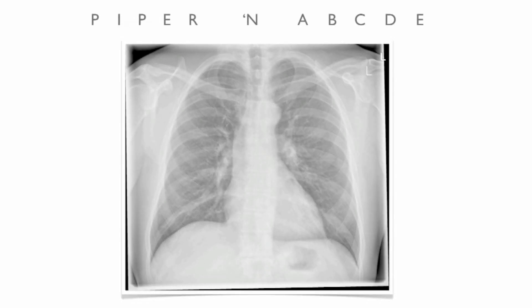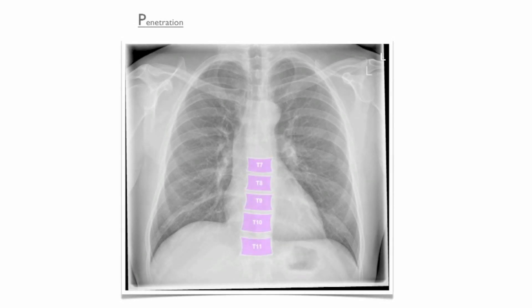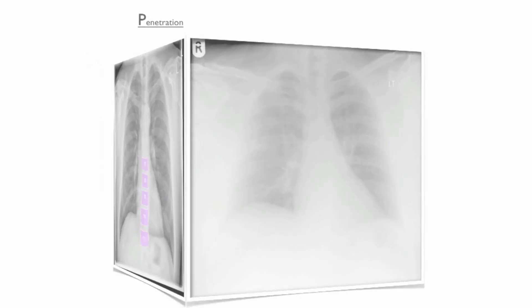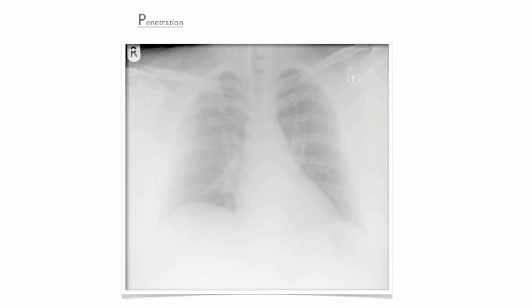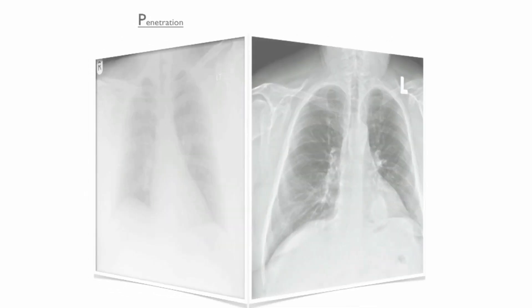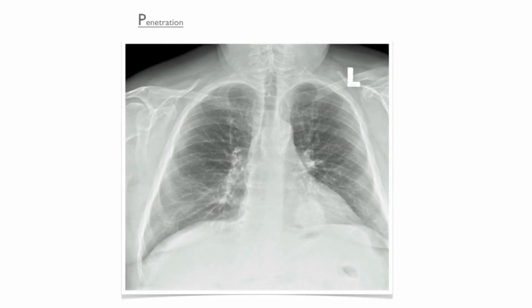The next step is to identify how well the X-rays have penetrated the patient's thorax. Penetration is assessed by identifying the outline of the thoracic vertebrae through the heart shadow. This radiograph is poorly penetrated — note how you cannot see the outline of the thoracic vertebrae. Good X-ray penetrance is important because it helps you identify pathology lying behind the heart shadow.